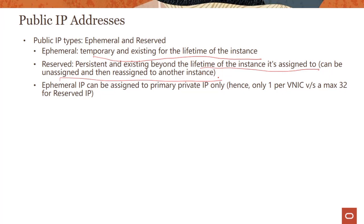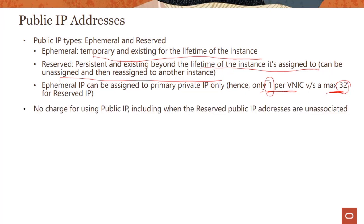An ephemeral IP can only be assigned to the primary private IP. In a VNIC there is only one primary private IP. Reserved public IPs, however, can cover all 32 addresses — one primary plus 31 secondary private IPs can all have reserved public IPs. There is no charge for using public IPs, including when reserved public IP addresses are unassociated. That said, you should be careful when creating them, as IPv4 address space is running out.